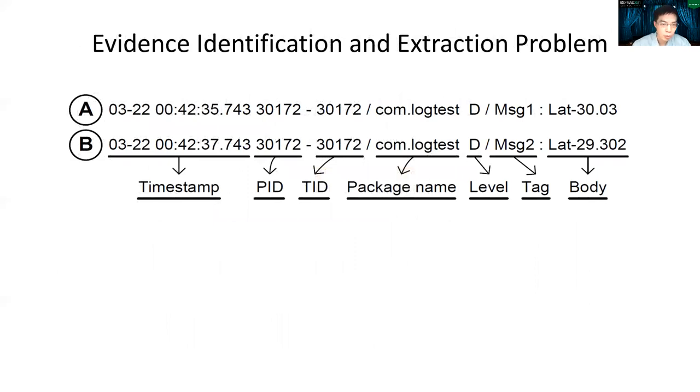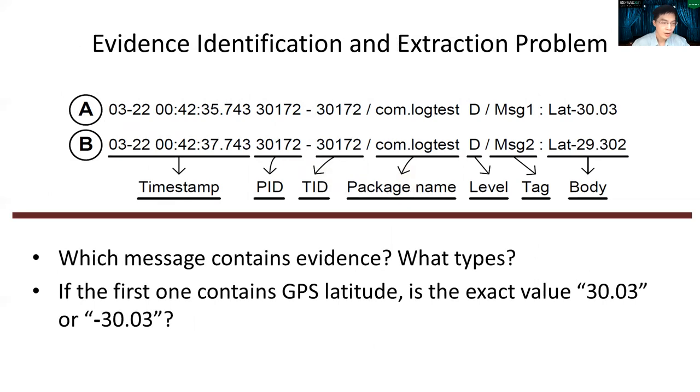Let me use this example to rephrase and motivate our research problems. Given that a forensic investigator wants to find the evidence from log message A and B, our first research problem, evidence identification problem, is to find which message contains the evidence. And if the answer is yes, what types of evidence they are? In this case, given that we find message A contains the GPS-related data, what's the actual value it's supposed to be? Here the evidence extraction problem comes, which targets at answering this kind of question.